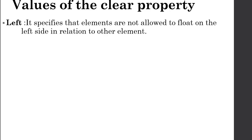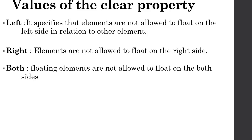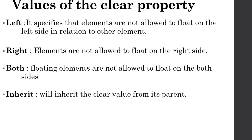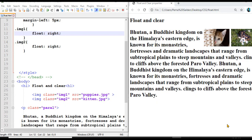Clear left means elements are not allowed to float on the left side in relation to other elements. Clear right means elements are not allowed to float on the right side. Clear both means floating is not allowed on either side. Clear inherit inherits the clear value from its parent. Clear none is the default value — it allows elements to float on both sides.